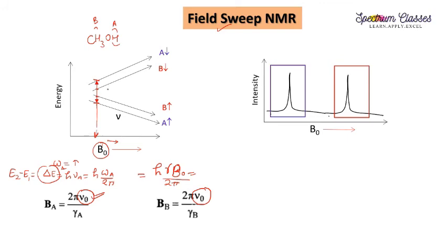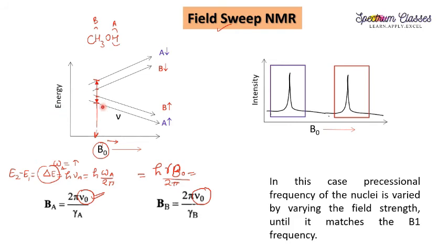As shown in the animation, as the energy gap increases, at a certain B0 value the energy difference equals the constant frequency value and resonance occurs. This specific field strength is required for nucleus B, and a different field strength is required for nucleus A. This explains how, at constant RF oscillator frequency and varying B0, the two different nuclei achieve resonance in the field sweep NMR spectrometer.